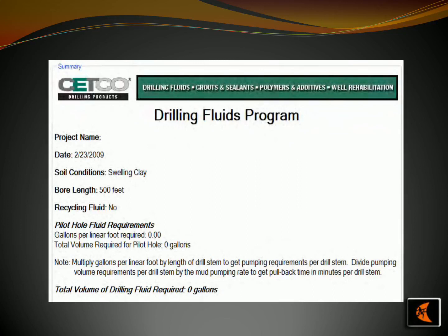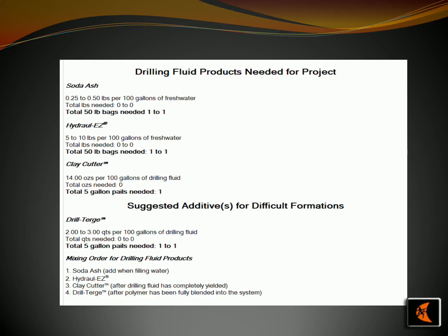Our presentation focuses on a project to drill 500 feet into swelling clay. We are using a range of techniques, including selecting the right drilling fluid, grouts, sealants, polymers, and additives. For this project, soda ash should be used at a rate of 0.25 to 0.50 pounds per 100 gallons of fresh water. Clay cutter should be used at a rate of 14 oz per 100 gallons of drilling fluid. The mixing order for the drilling fluid products should be: soda ash when filling water, Hydrol-EZ after drilling fluid has completely yielded, and clay cutter after polymer has been fully blended into the system.